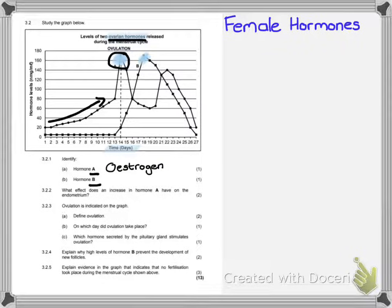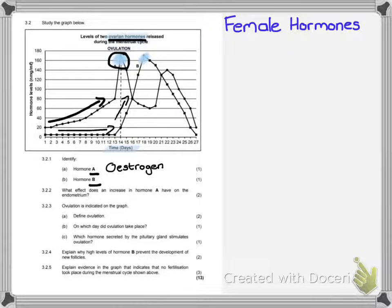Hormone B peaks around days 17 and 18. If you look at the graph, it is very shallow throughout the beginning of the menstrual cycle and then all of a sudden increases after day 14, which is ovulation. The only hormone released after ovulation is progesterone — the ovarian hormone that is there to maintain the pregnancy.